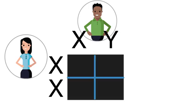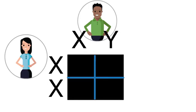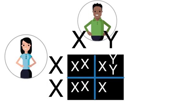Boys receive an X from their mothers. Girls also receive an X from their mothers. Girls receive an X from their fathers, and boys receive a Y from their fathers.